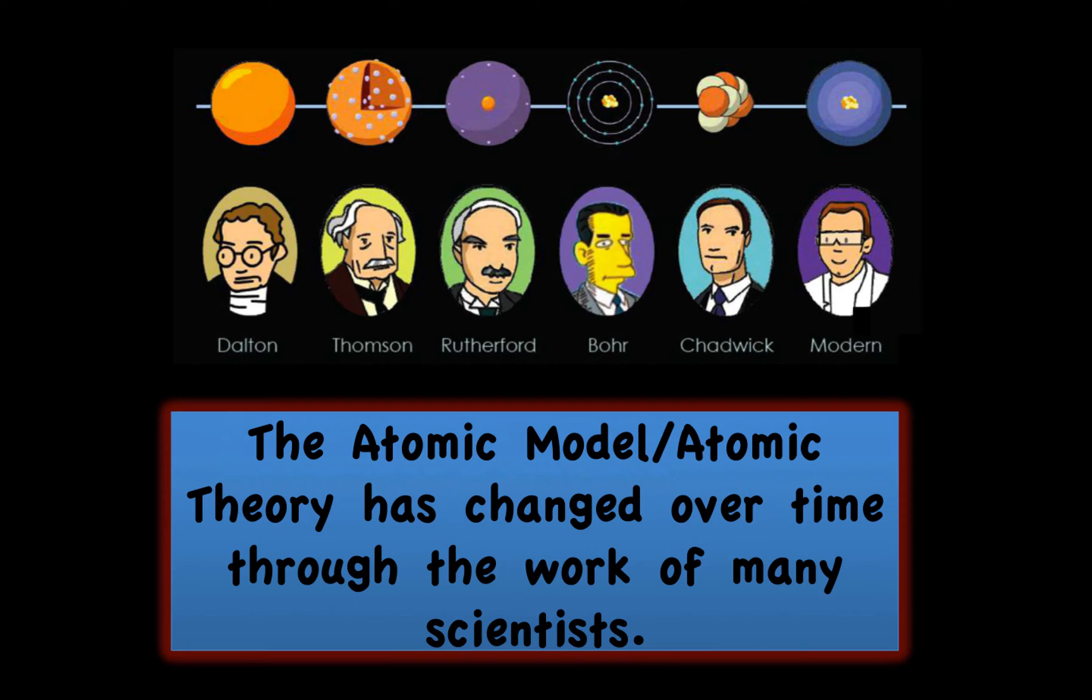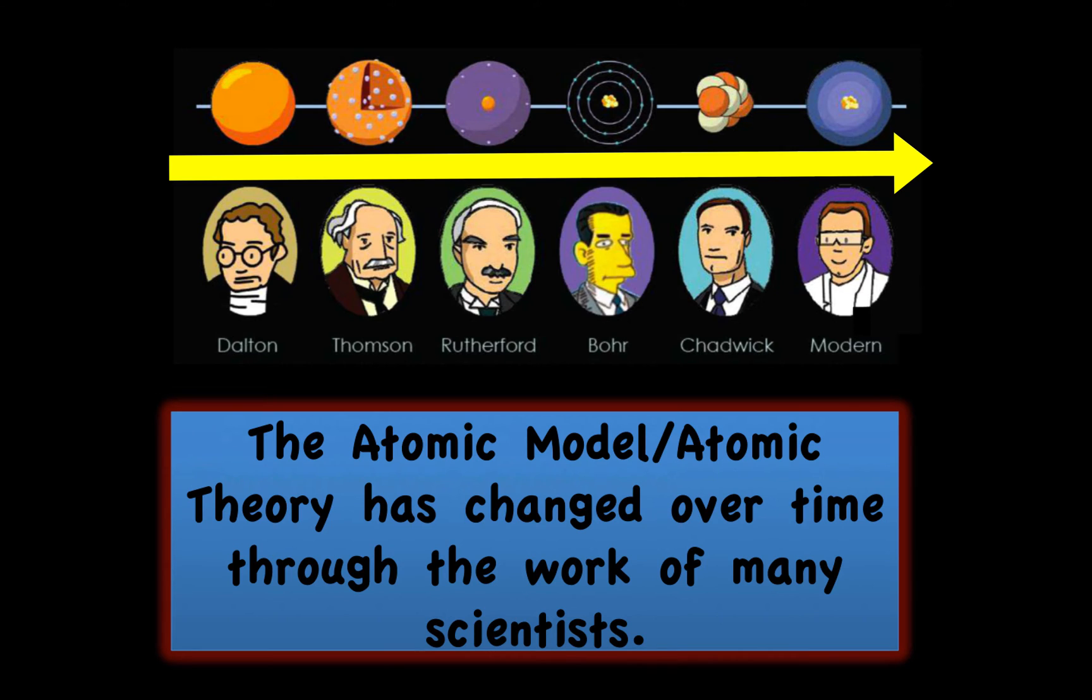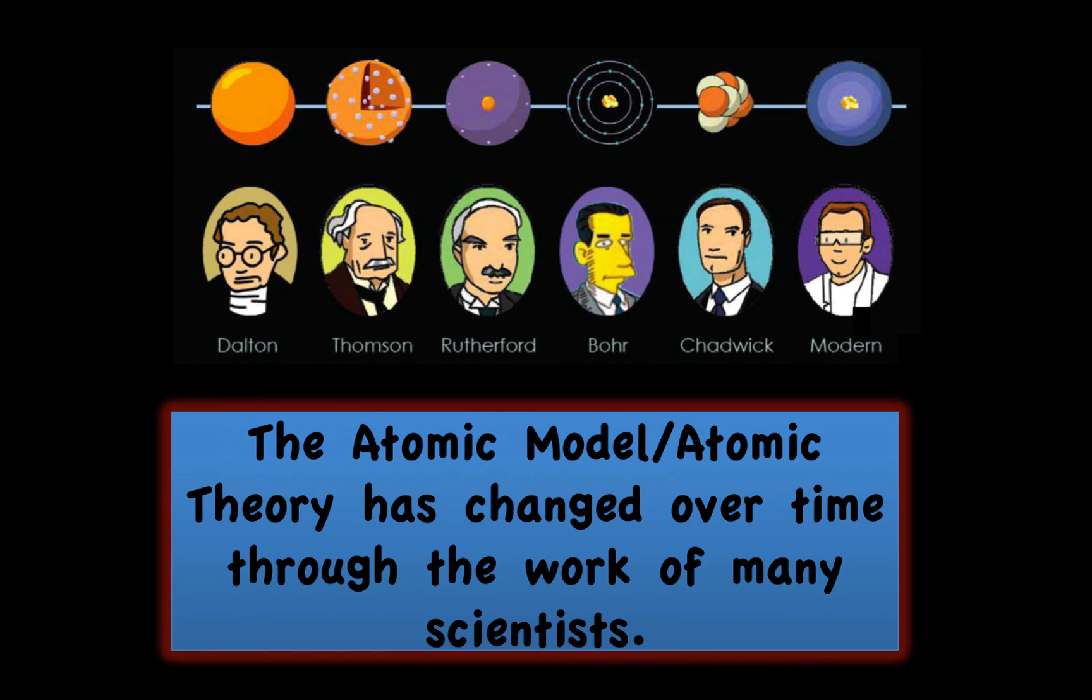The modern atomic theory, or the modern model of the atom, has changed over a long period of time through the work of many scientists. Each of the scientists built upon the work of other scientists to arrive at a more accurate description of the atom. The current atomic theory is an explanation of the results of many experiments. It is a model that explains the properties and behavior of atoms, and is based on many previous models, which were based on the scientific evidence at that time.